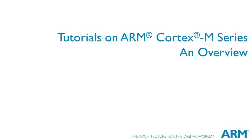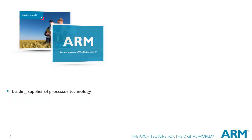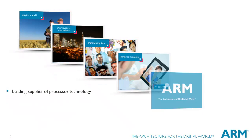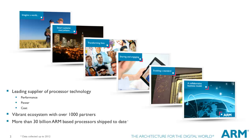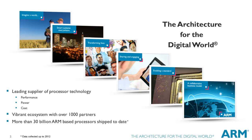Welcome. This is a series of tutorial videos on ARM processors. ARM is the industry's leading supplier of process technology, offering the widest range of processor cores to address the performance, power and cost requirements for most all application markets. Combining a vibrant ecosystem with over 1000 partners delivering silicon, development tools and software, and more than 30 billion processors sold, with more than 60 million sold every day, ARM truly is the architecture for the digital world.